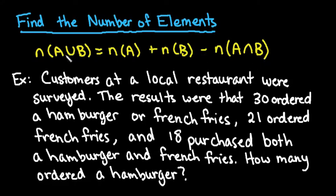You can use this formula to find any one of these. I could find the number that are in A or B, I could find the number just in A, I could find the number just in B, or I can find the number that is both in A and B.